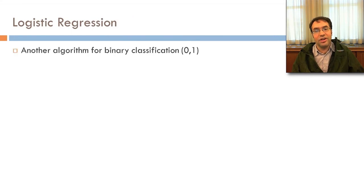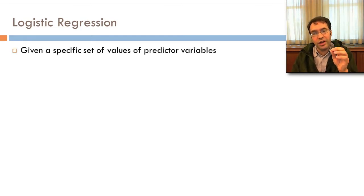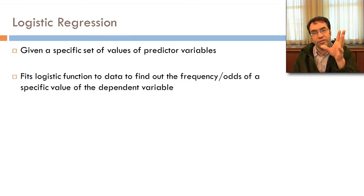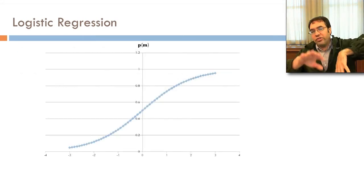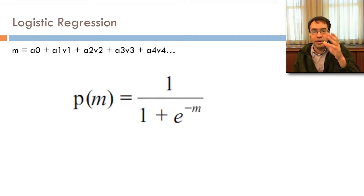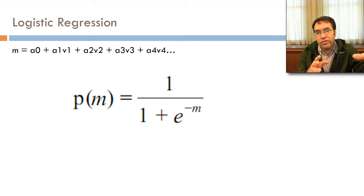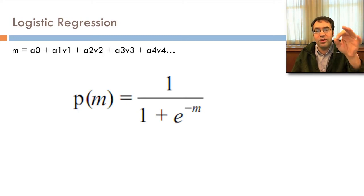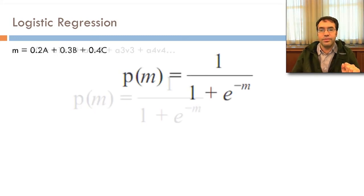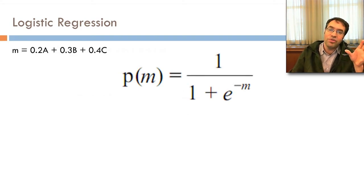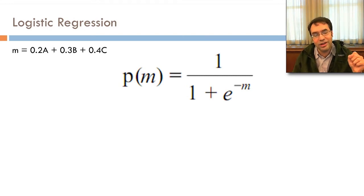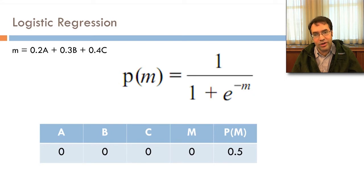Now let's talk about logistic regression — another algorithm for binary classification. Given a specific set of values of predictor variables, it fits a logistic function to find out the frequency or odds of a specific value of the dependent variable. You take a function m, which is a constant plus a set of variables and weights, and compute p(m) equals 1 over (1 plus e to the negative m). For example, with m equals 0.2a plus 0.3b plus 0.4c: if they're all 0, m is 0 and p(m) turns out to be 0.5.